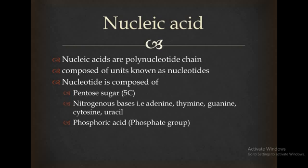The third component is the phosphate group, that is phosphoric acid, which is important. Nucleic acid is a polymer of nucleotides, and each nucleotide has three parts: pentose sugar, nitrogenous bases, and phosphoric acid.